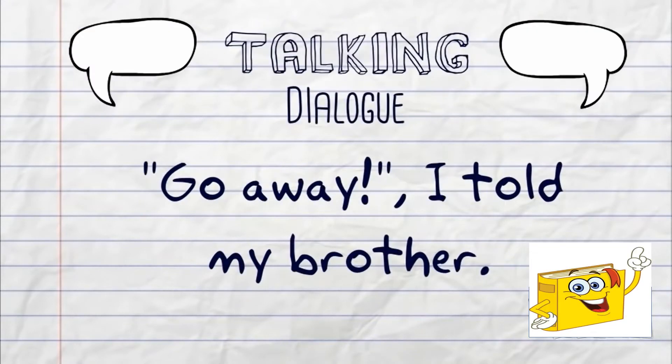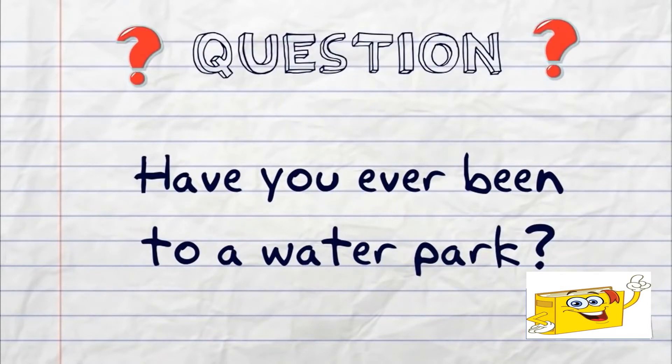Next is talking, or dialogue. For example: Go away, I told my brother. Using dialogue to start your writing is a good idea as well. Do not forget to put the quotation marks in your dialogue. Next is asking a question. Starting with a question in your introduction is very attractive to the reader. The reader might get interested in the following details of your story.